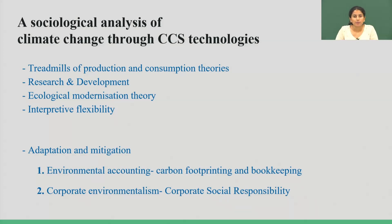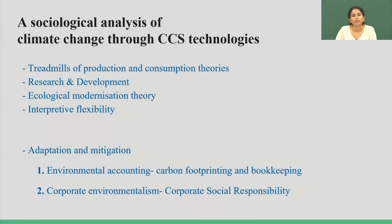A theory that ties all of these together is interpretive flexibility. Interpretive flexibility is based on the understanding that you have the technical sciences and the social sciences. The technical sciences are where the majority of understanding and technicality of CCS has come from, but the social sciences have also been able to critique those factors. To bridge this gap, we can use interpretive flexibility — the idea is to not rely on either of the two but to rely on both, in order to advance the climate change conversation toward a successful result.